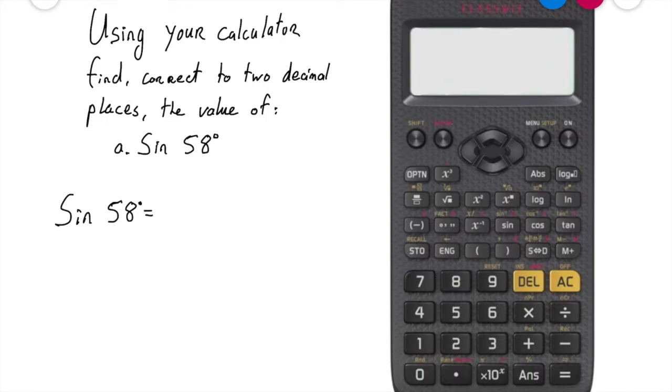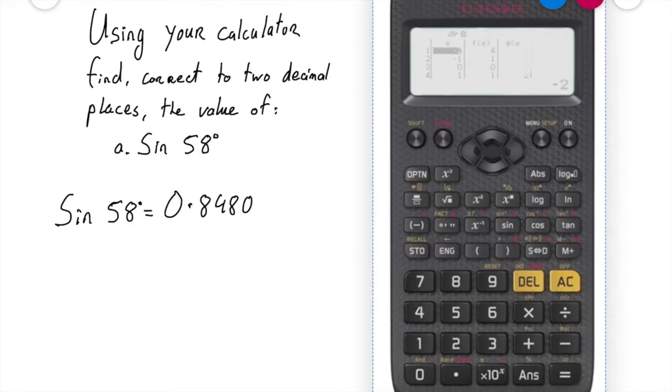In this question here I'm looking for sine 58, so I'm going to type in 58, just those three buttons. I then press the equals and the calculator will show me an answer. It'll be a long decimal answer of 0.8480 and lots and lots of numbers thereafter.